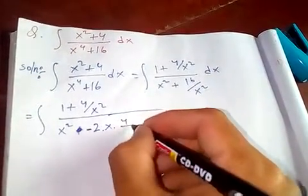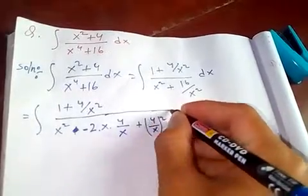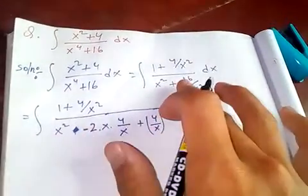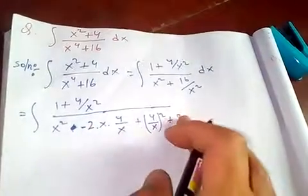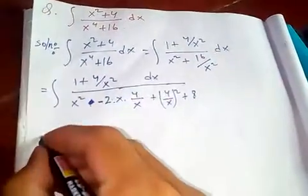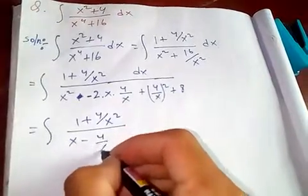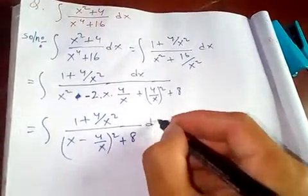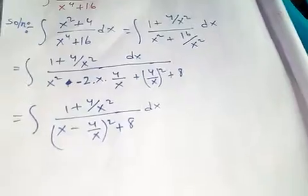Let b = 4/x. So this cancels. If you take 2 times b to get back the required term, the 8 will cancel and you get back the original integral. This becomes (1 + 4/x²), which is (x - b)² + 8, dx. Now let's use our substitution method.